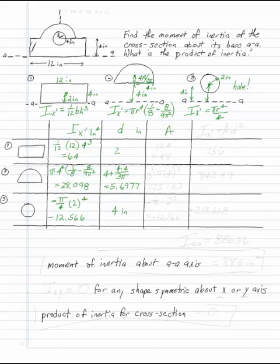A of each of them is just the area. So this is 12 times 4, or 48. The area of the semicircle is πr² over 2, which is 25.133. And r for the hole, the area of the hole, is πr². And it has to be negative because it's a hole, so this is negative 12.566.